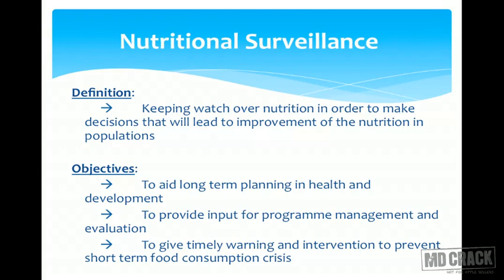Coming to nutritional surveillance and nutritional monitoring — surveillance and monitoring are sometimes used synonymously, but that is not the case. Nutritional surveillance means keeping a watch over nutrition in order to make decisions that will lead to improvement of nutrition in populations. The objectives are: to aid long-term planning in health and development, to improve input for program management and evaluation, and to give timely warnings and interventions to prevent short-term food consumption crises.